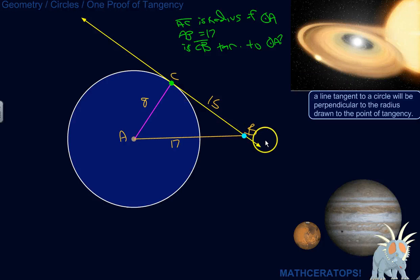So the question is, is this line BC, is that a tangent to circle A?